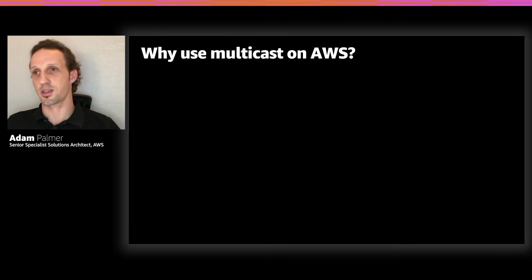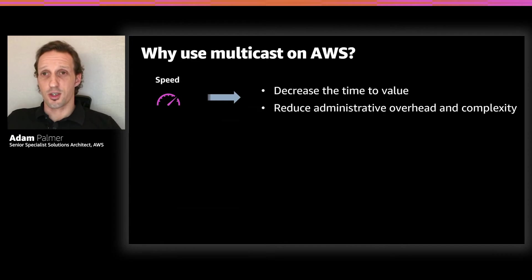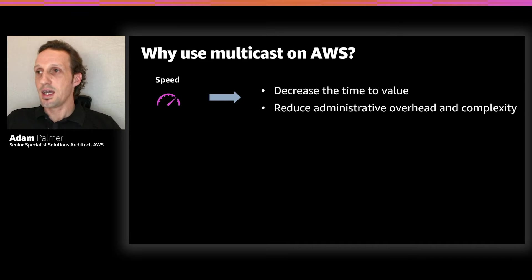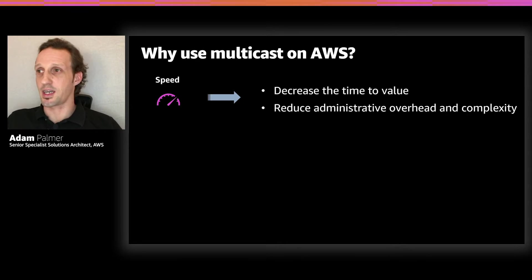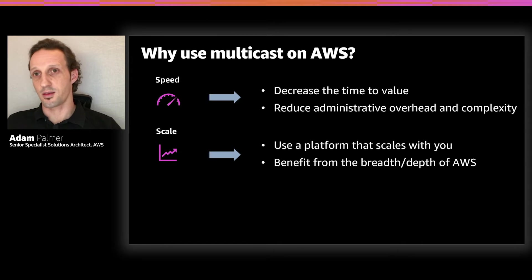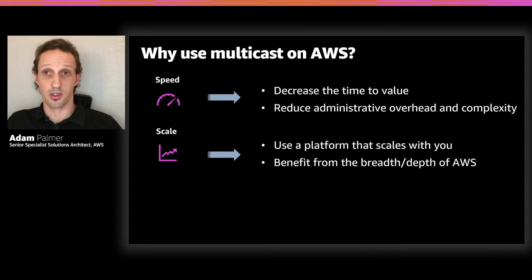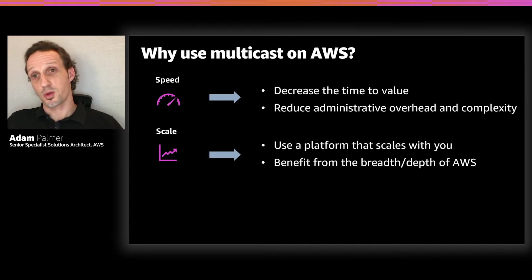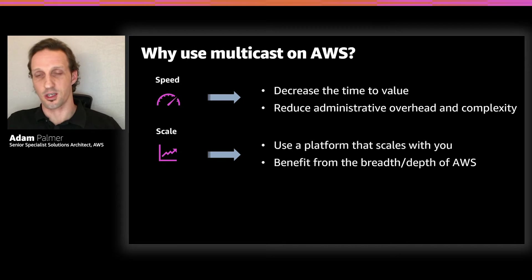So why use multicast on AWS? The first reason is speed. As a customer, you're always thinking about decreasing your time to value — how quickly can you benefit from an application you've deployed in the cloud? And benefiting from the APIs and automation capabilities afforded by AWS, you get to reduce admin overhead and complexity. Another reason is scale — you get to benefit from the massive global scale of AWS, potentially reaching geographies you haven't been able to get into previously, and augmenting your application with the significant breadth and depth of AWS services.